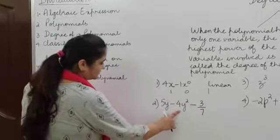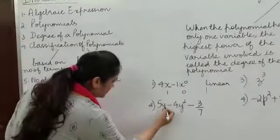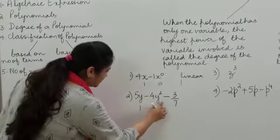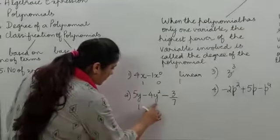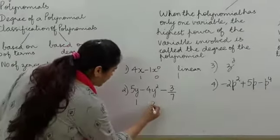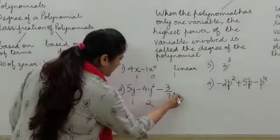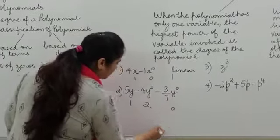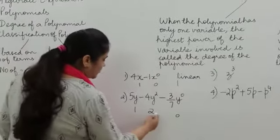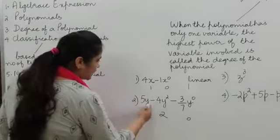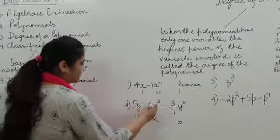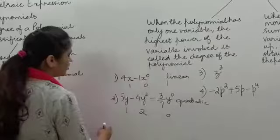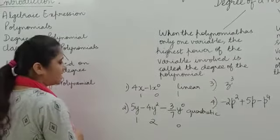Look at the second one. The first term is 5y — the variable is y and its power is 1. The second term is 4y squared, so the power of y is 2. The third term is 3/7 — y is not visible there, so the power of y is 0. The highest of 1, 2, and 0 is 2. So the degree of this polynomial is 2, also called a quadratic polynomial.